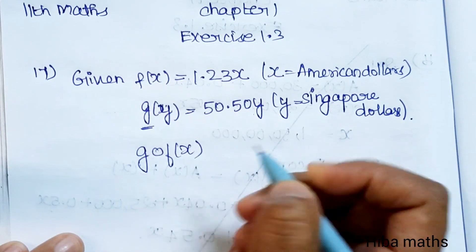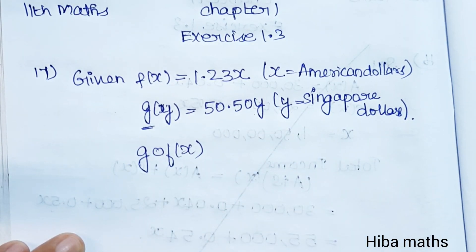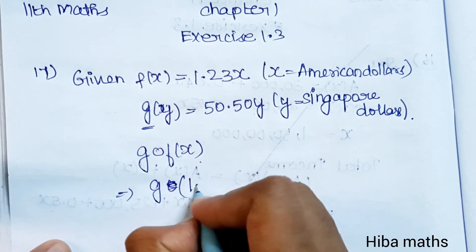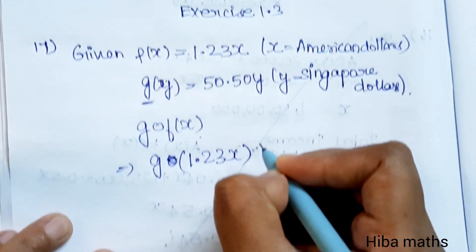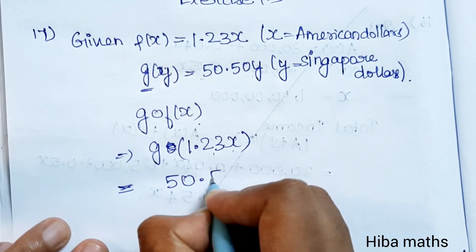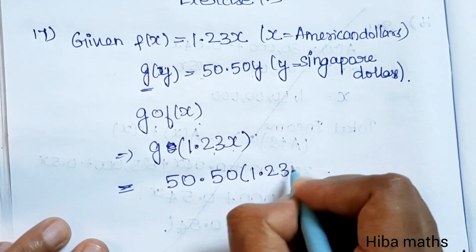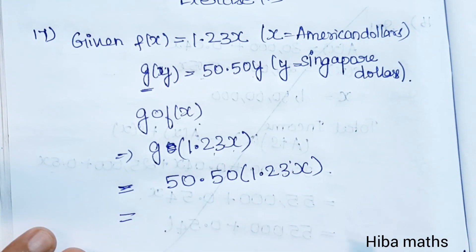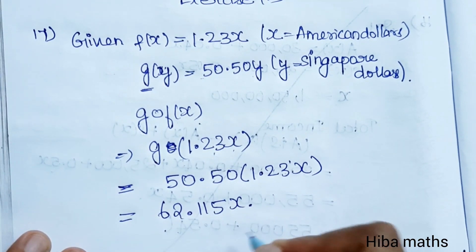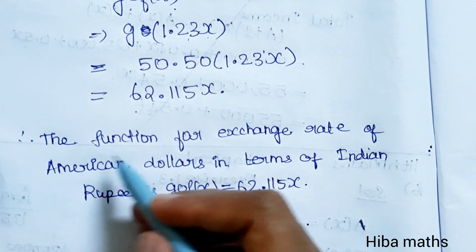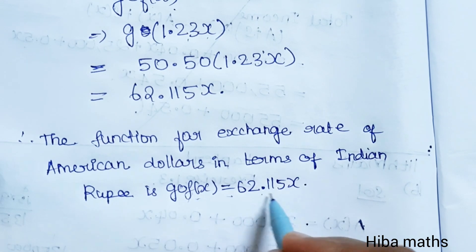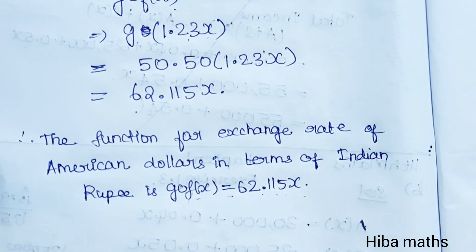We need to find g of f of x, which gives the exchange rate in Indian rupee. So g of f of x equals 50.50 multiplied by 1.23x, which gives g of f of x equals 62.115x. Thank you so much for watching.